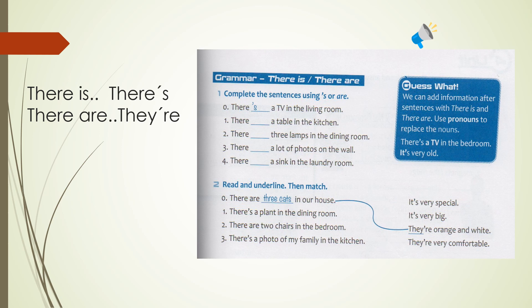Luego nos vamos al ejercicio 2. Read and underline, then match. Lea y subraye, entonces marque. Number 0, there are three cats in our house. They are orange and white. Hay tres gatos en nuestra casa. Ellos son anaranjado y blanco. ¿Qué tiene subrayado? La cantidad. Three cats. Tres gatos.